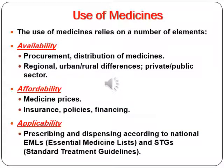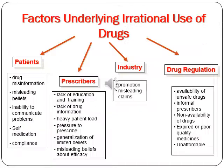The use of medicine relies on a number of elements: availability, procurement, distribution to different parts, affordability, medicine price, insurance policies, applicability, prescribing, and dispensing practice. Factors underlying irrational use of drugs include patient factors such as drug misinformation, misleading beliefs, inability to communicate problems, self-medication, and compliance issues. Prescriber factors include lack of education and training, lack of drug information, pressure to prescribe, and misleading industry promotion.